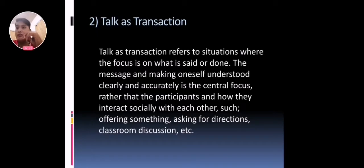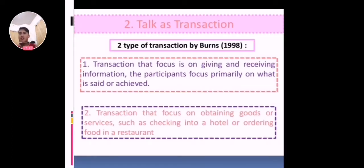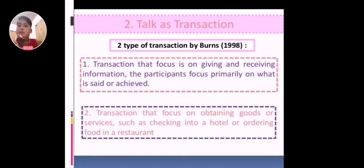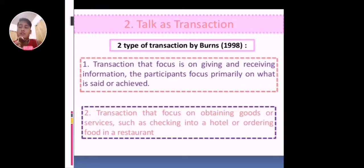There are two types of transaction identified by Burns. The first type focuses on giving and receiving information, where participants focus primarily on what is said or achieved. The second type focuses on obtaining goods or services, such as checking into a hotel or ordering food in a restaurant.